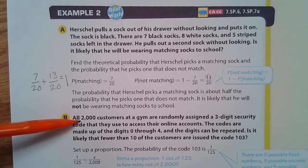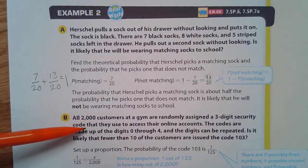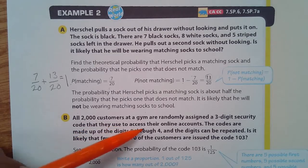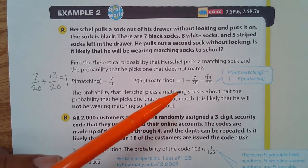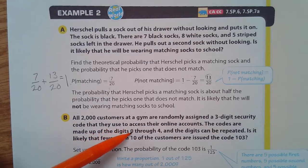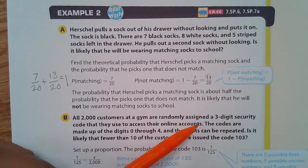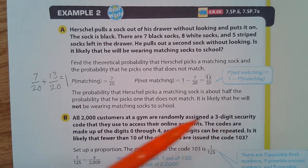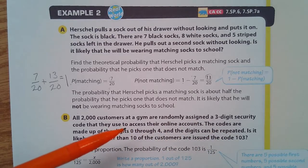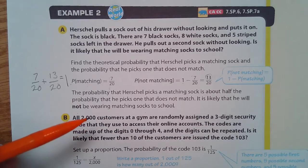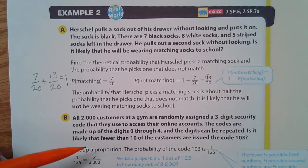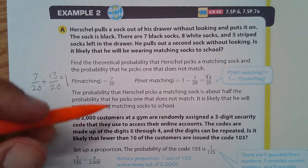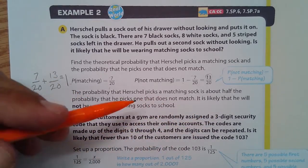Part B, if 2,000 customers at a gym are randomly assigned a three digit security code that they use to access their online accounts. The codes are made up of the digits 0 through 4 and the digits can be repeated. Is it likely that fewer than 10 customers are issued the code 103? Okay, so first we have to figure out how many possible codes are there.